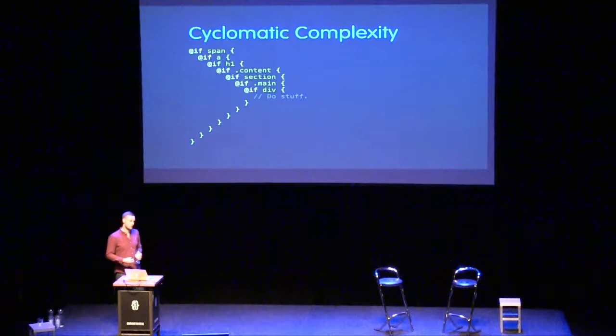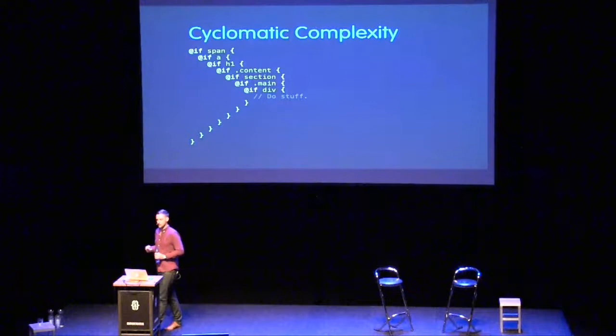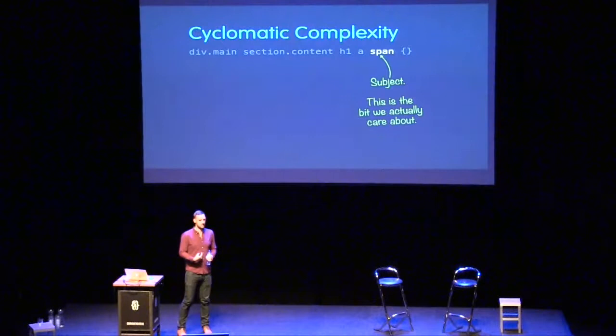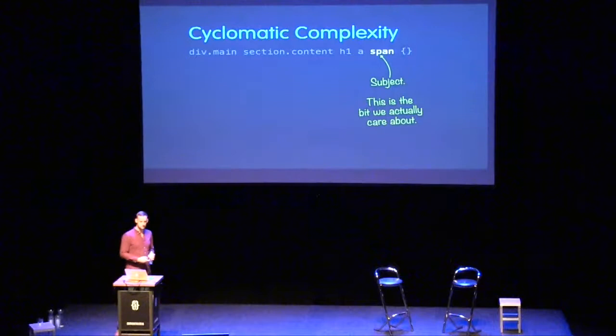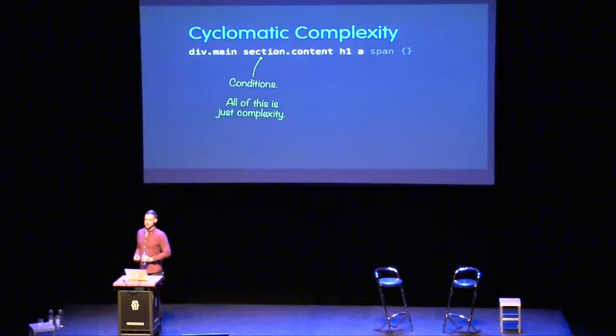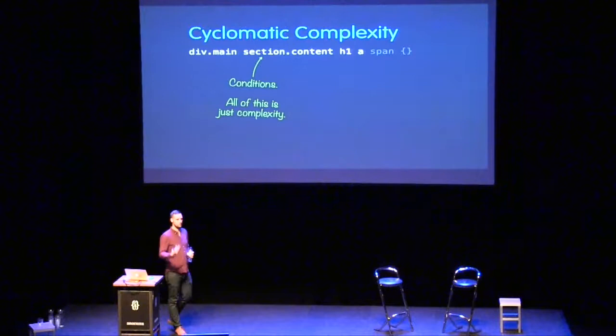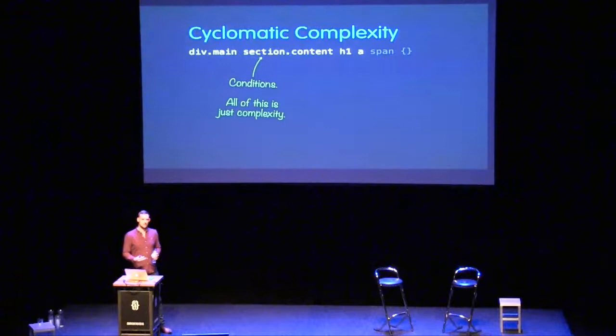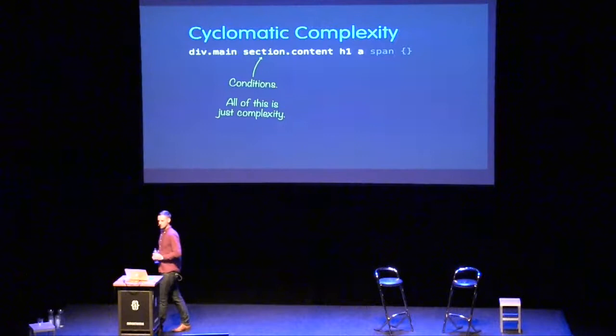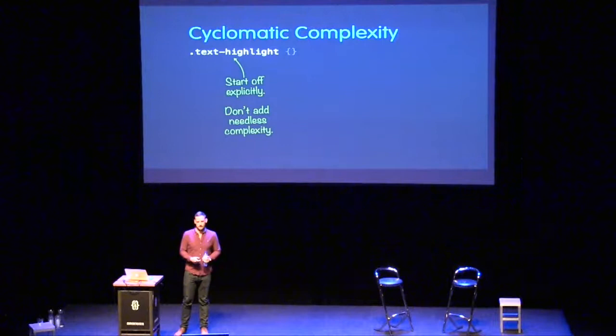I train developers to see their selectors as two distinct parts. First, the subject — the only bit we actually care about. This `span` is the only important bit; that's the thing we're styling. Everything else is just complexity added to narrow down the search because we picked such a bad subject. `span` captures an unknown amount of the DOM, so we then have to start narrowing the search by adding complexity. The solution is simply to capture less of the DOM to start with — be much more explicit.